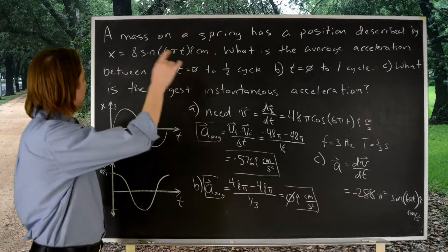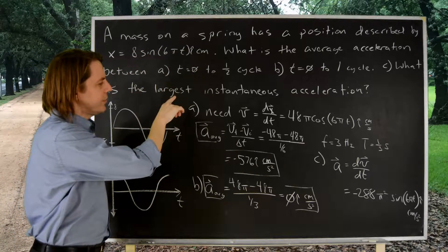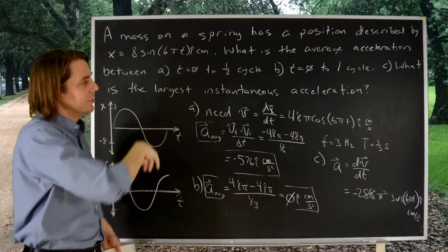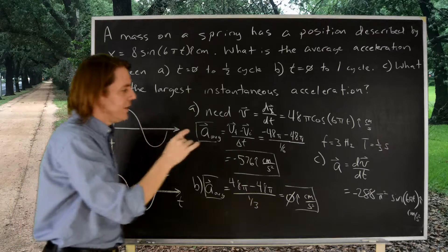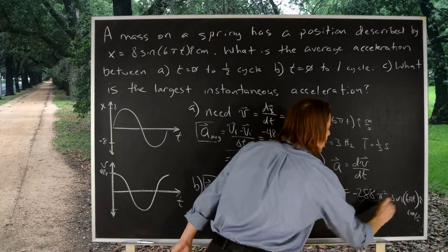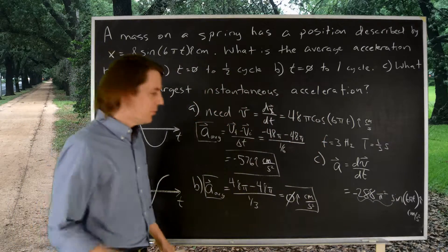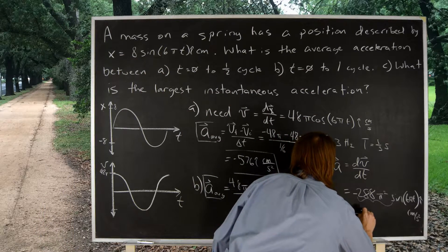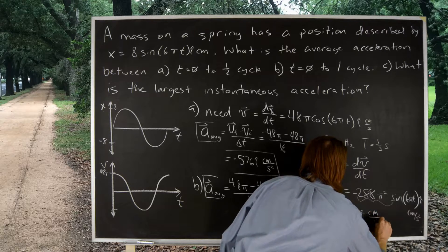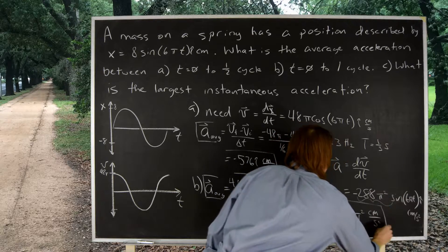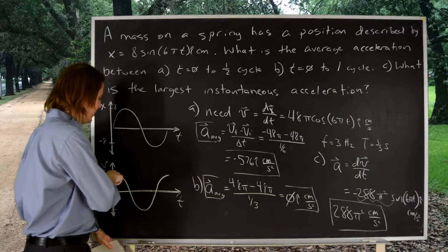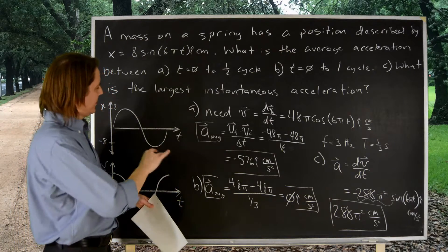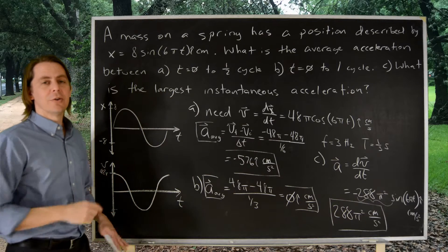So, the answer then, what we ask for is the largest instantaneous acceleration. That kind of sounds like a magnitude, not a vector. It sounds like just how big is it. Is it positive or negative? It doesn't matter how big is it. The answer is simply whatever is in front of the sine. The 288 pi squared. So, the answer then, is 288 pi squared centimeters per second squared. And, you can say, oh, but it's negative, but it's a sinusoid. At one point, it'll be negative, one will be positive. It'll go up and down. So, that is for a complicated motion, how to calculate those two quantities.